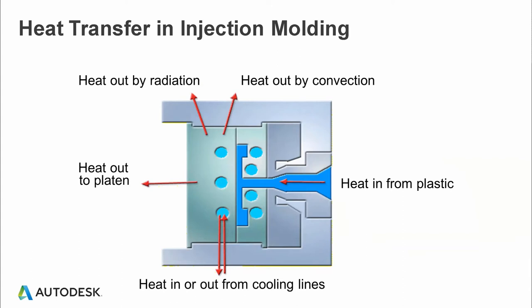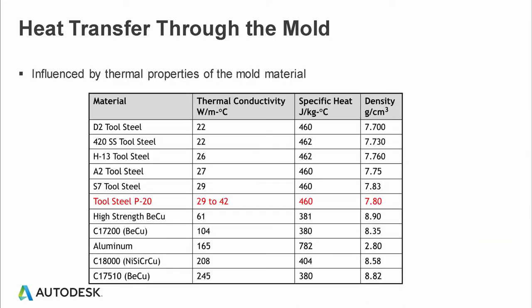Convection is prominently the highest mode of heat transfer, and that's one reason we try to use different cooling channel configurations and different coolants, which we will discuss in the forthcoming slides. Heat transfer in the mold is directly impacted by the mold material. The highlighted one here is P20, which Moldflow uses by default as it is the most commonly used tool steel.